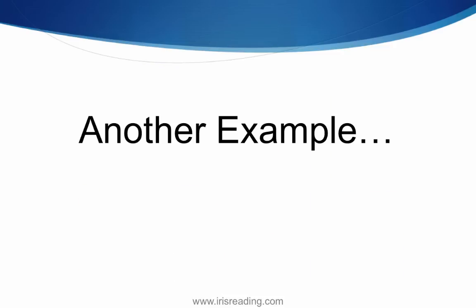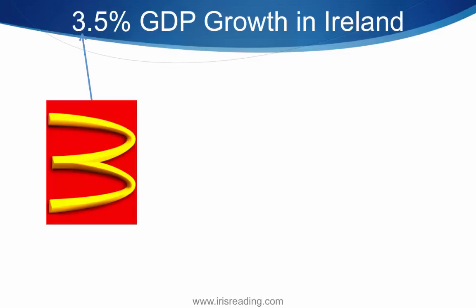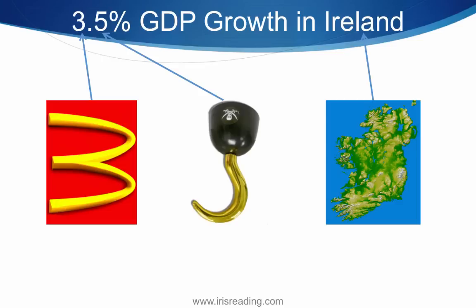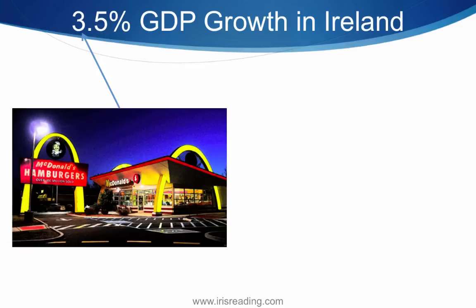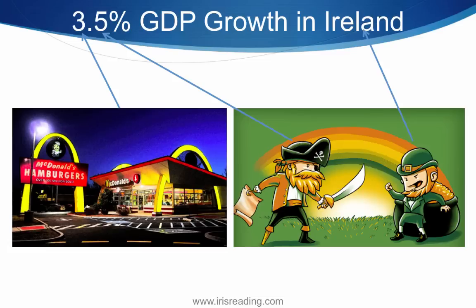Another thing you can do: what if you have to remember that there was 3.5% GDP growth in Ireland? Well we need something to represent McDonald's for the three, a hook for the five, and something related to Ireland. So imagine yourself walking into McDonald's, and for five, hooks remind me of pirates — so I would picture a pirate in the McDonald's. And for Ireland, the first thing I thought of was a leprechaun.